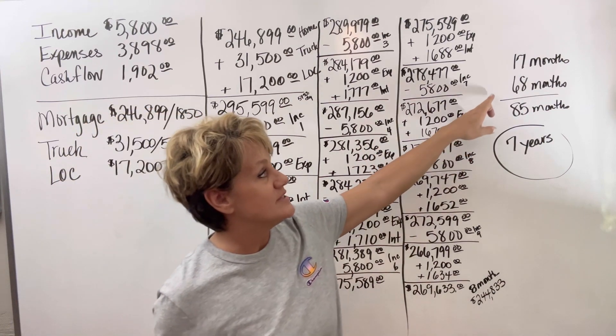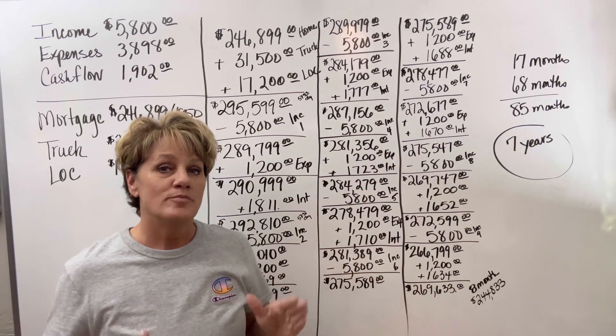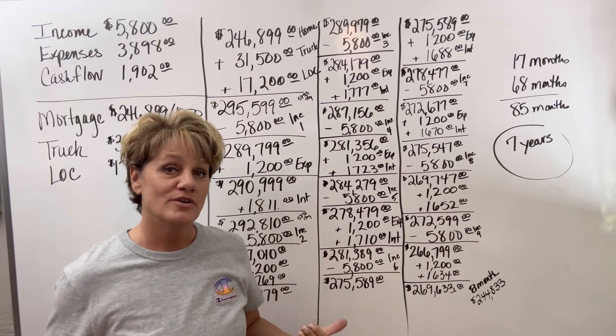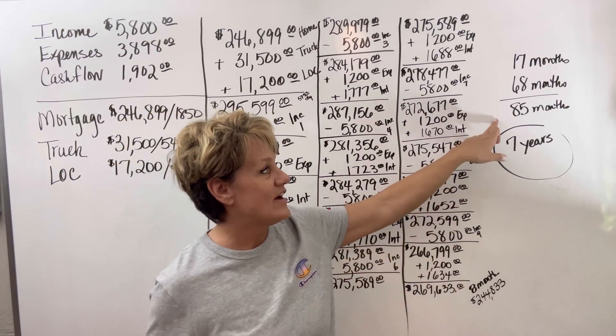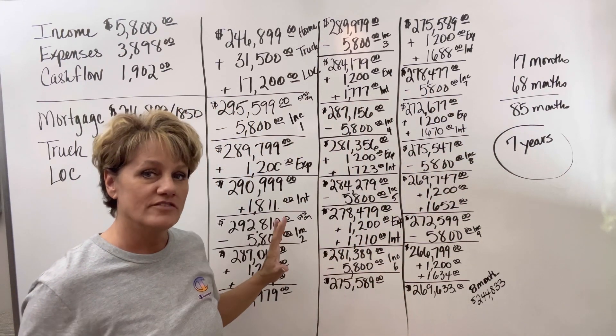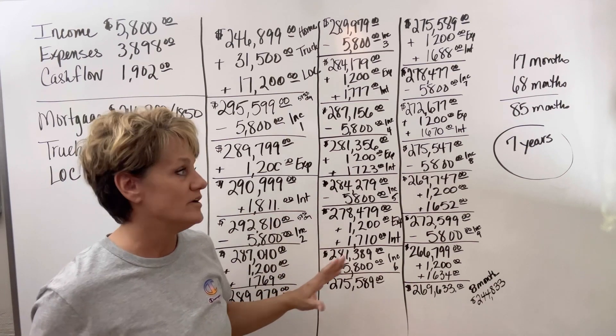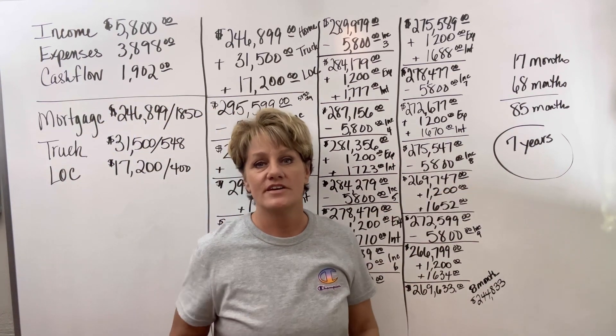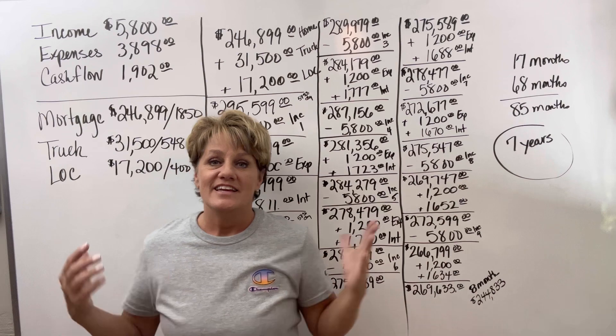Now it will take him 68 more months to pay off the home too. What does that mean? In 85 months, he has cleared out all of his debt, including his home. So in just over seven years, he is out of debt.